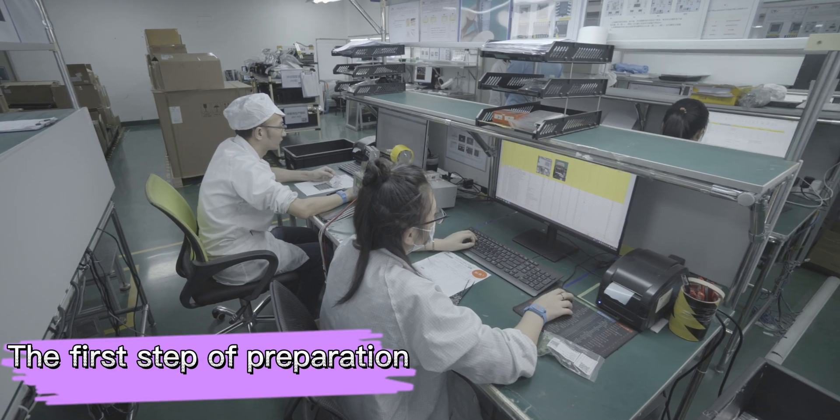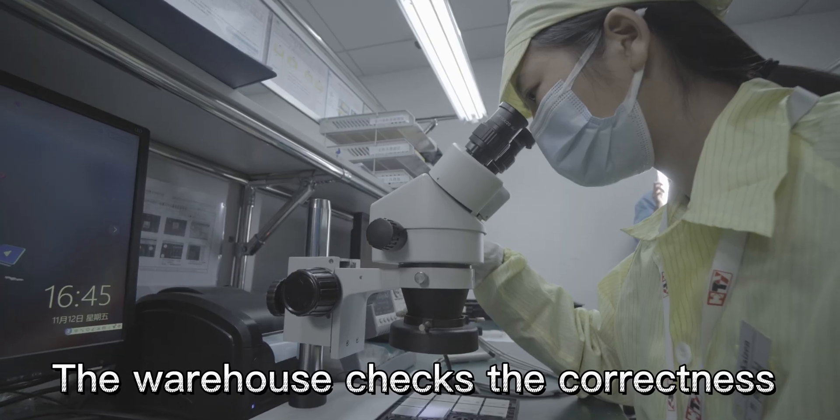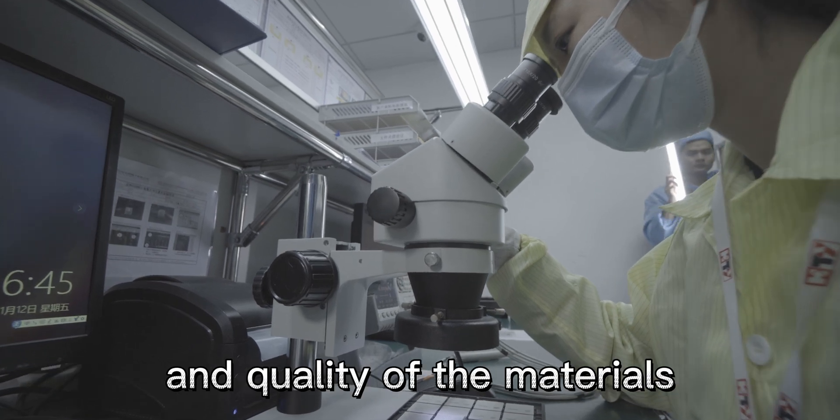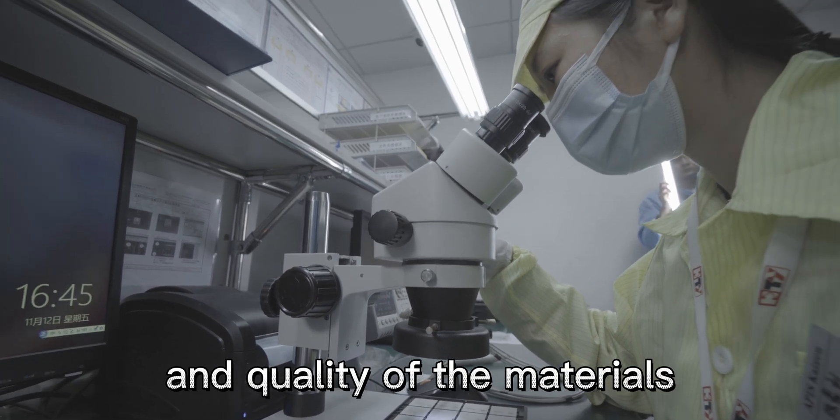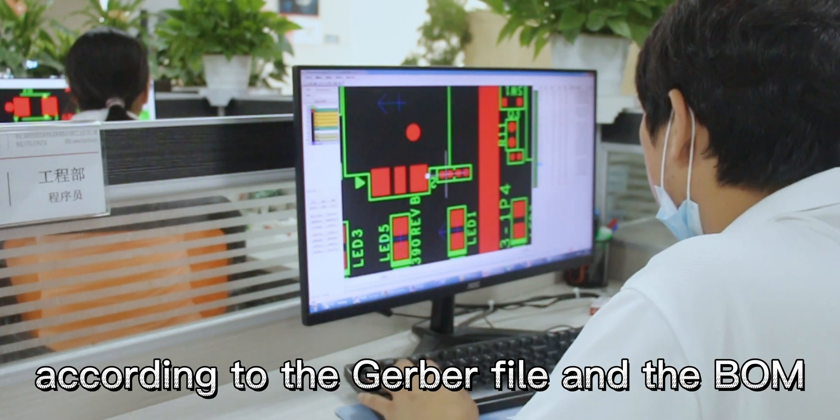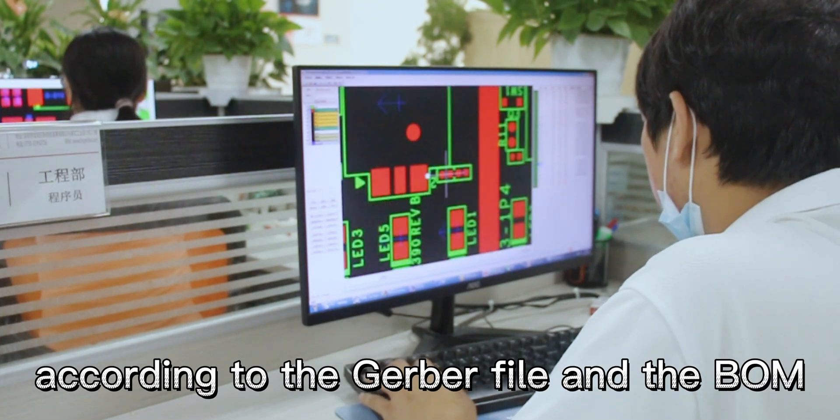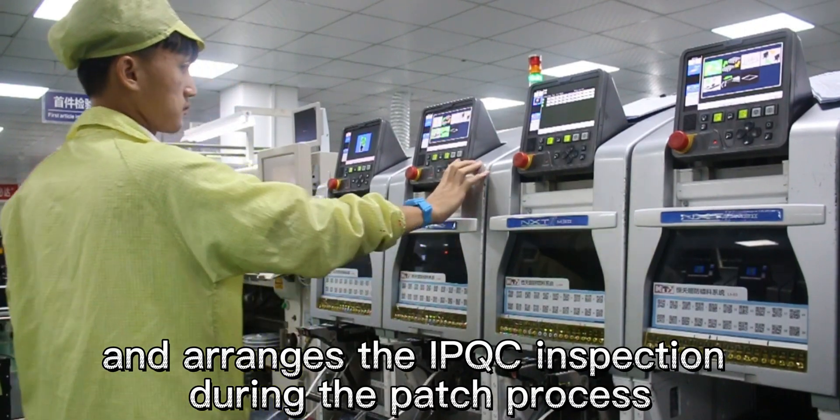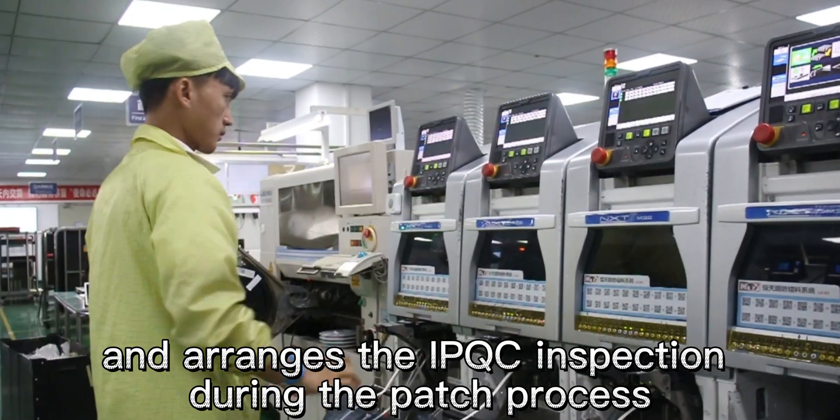The first step is preparation. The warehouse checks the correctness and quality of the materials. The engineer makes the patch production program according to the Gerber file and the BOM, and arranges the IPQC inspection during the patch process.